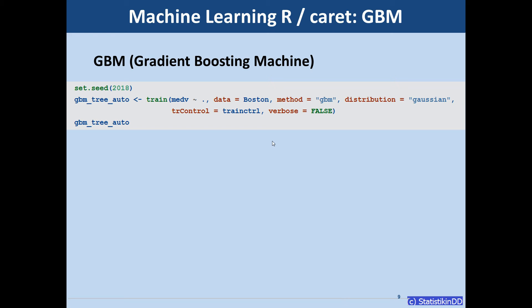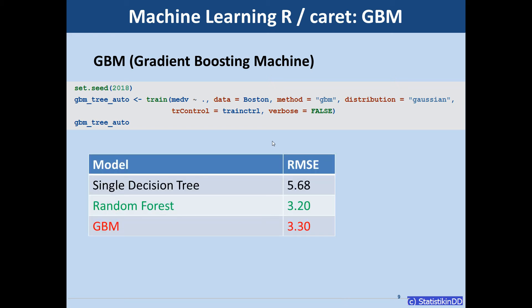We look at this GBM model and compare it to the random forest model. And this is a disappointment because the GBM has a higher root mean squared error. So our colleague smiles and we have lost the competition at this stage.